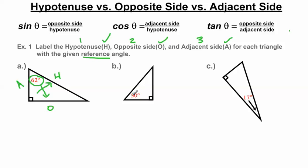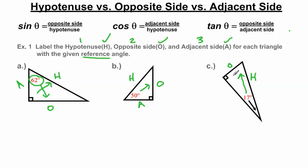Moving on — focusing on the 50 degree angle, the hypotenuse has to be the longest side. The side opposite the 50 degree reference angle is O, and the third side has to be adjacent. And lastly, focusing on the 17 degree angle: opposite the 90 is the hypotenuse, opposite the 17 degree reference angle is O, and the third side is the adjacent side.